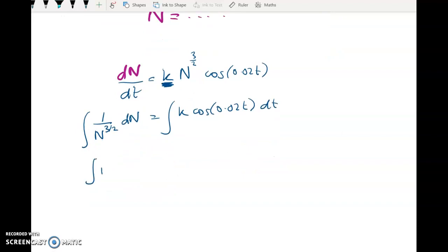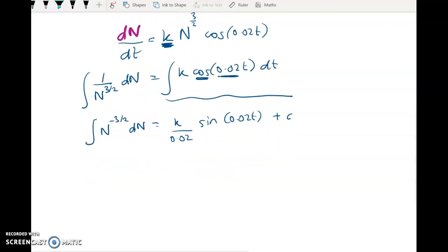So integrating this, this is N to the negative 3 over 2, and now I'm going to complete the integration here. Cosine will integrate to sine of 0.02T. I need to have K here, and I need to divide out the 0.02, and I'm going to put a plus C on the end, and we'll figure that out later on.